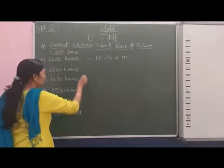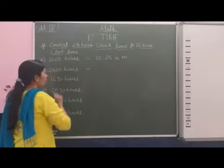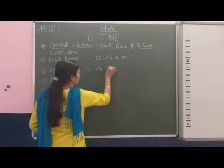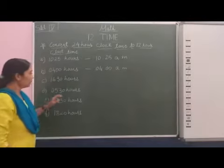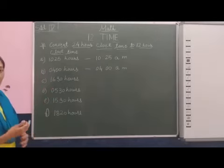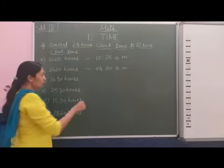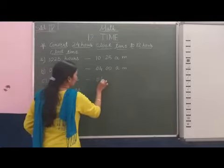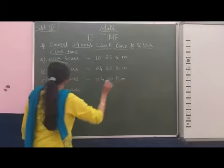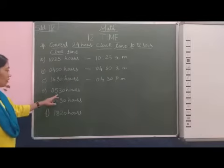Now here 4:00 hours, so 4 hours means 4 hours 0 minutes AM, it's morning time. Next, 16:30 hours. 16 hours means minus 12, so we get 4 hours 30 minutes PM, that's evening time.